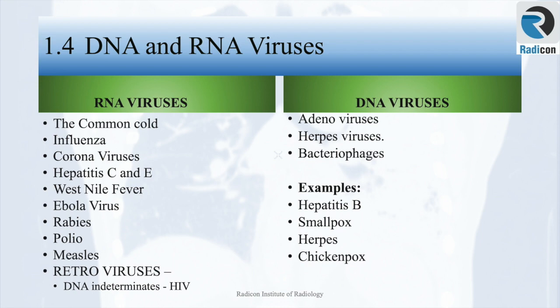Examples of RNA viruses are common cold, influenza, SARS, COVID-19, hepatitis C and E, West Nile fever, Ebola virus disease, rabies, polio, and measles. Examples of DNA viruses are adenoviruses, herpesviruses, and bacteriophages. Some of the illnesses caused by DNA viruses are hepatitis B, smallpox, herpes, and chickenpox.